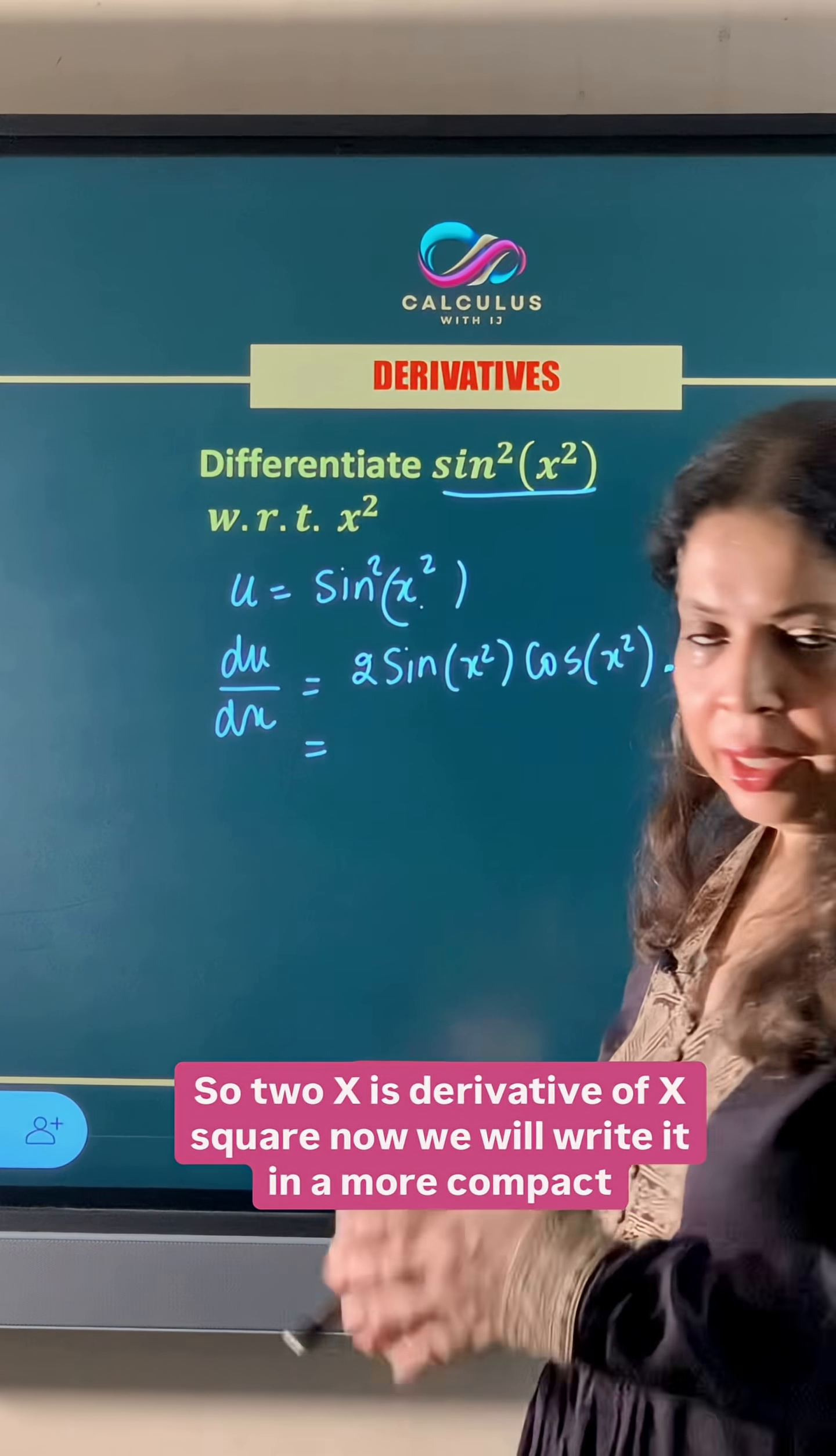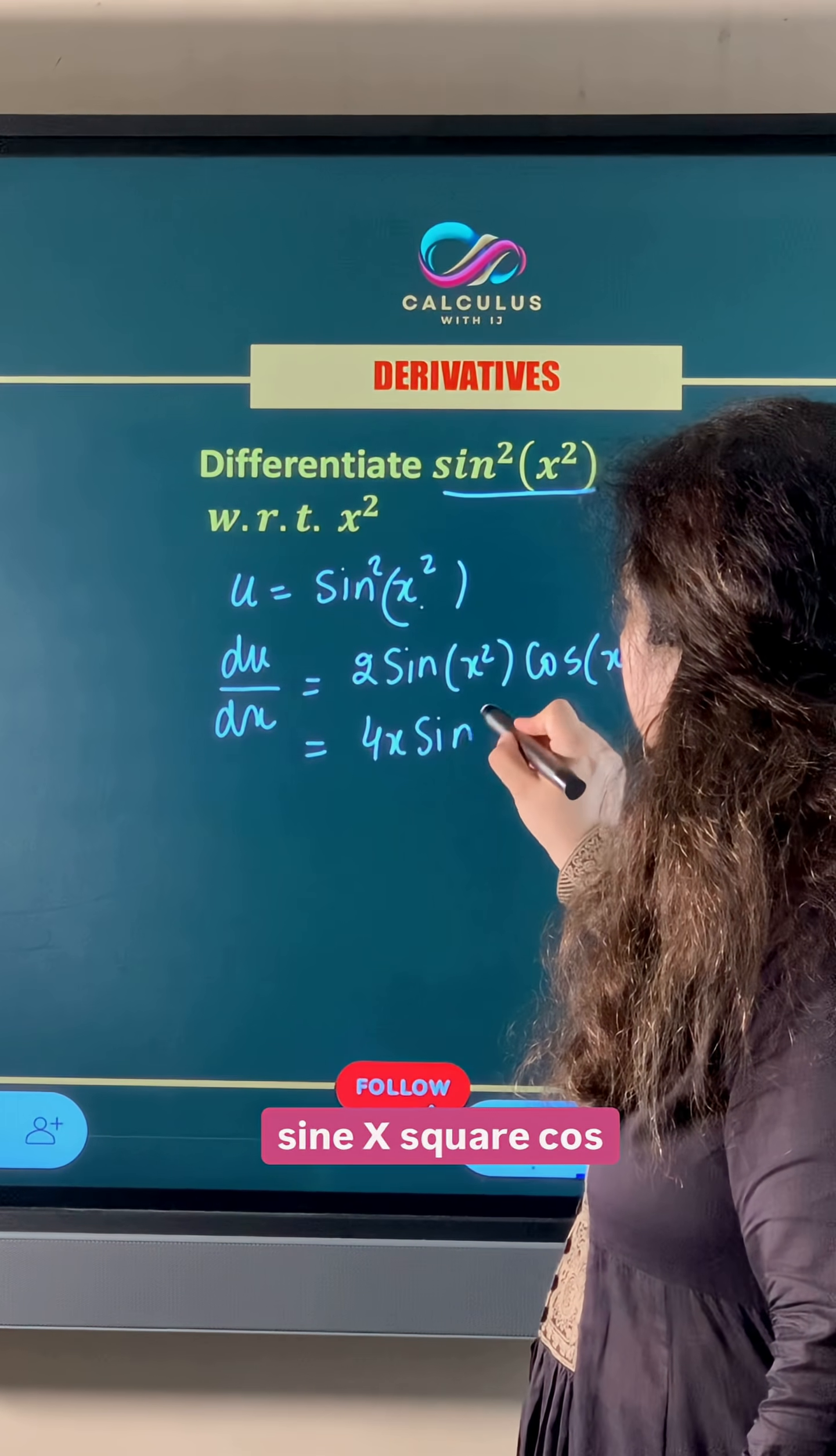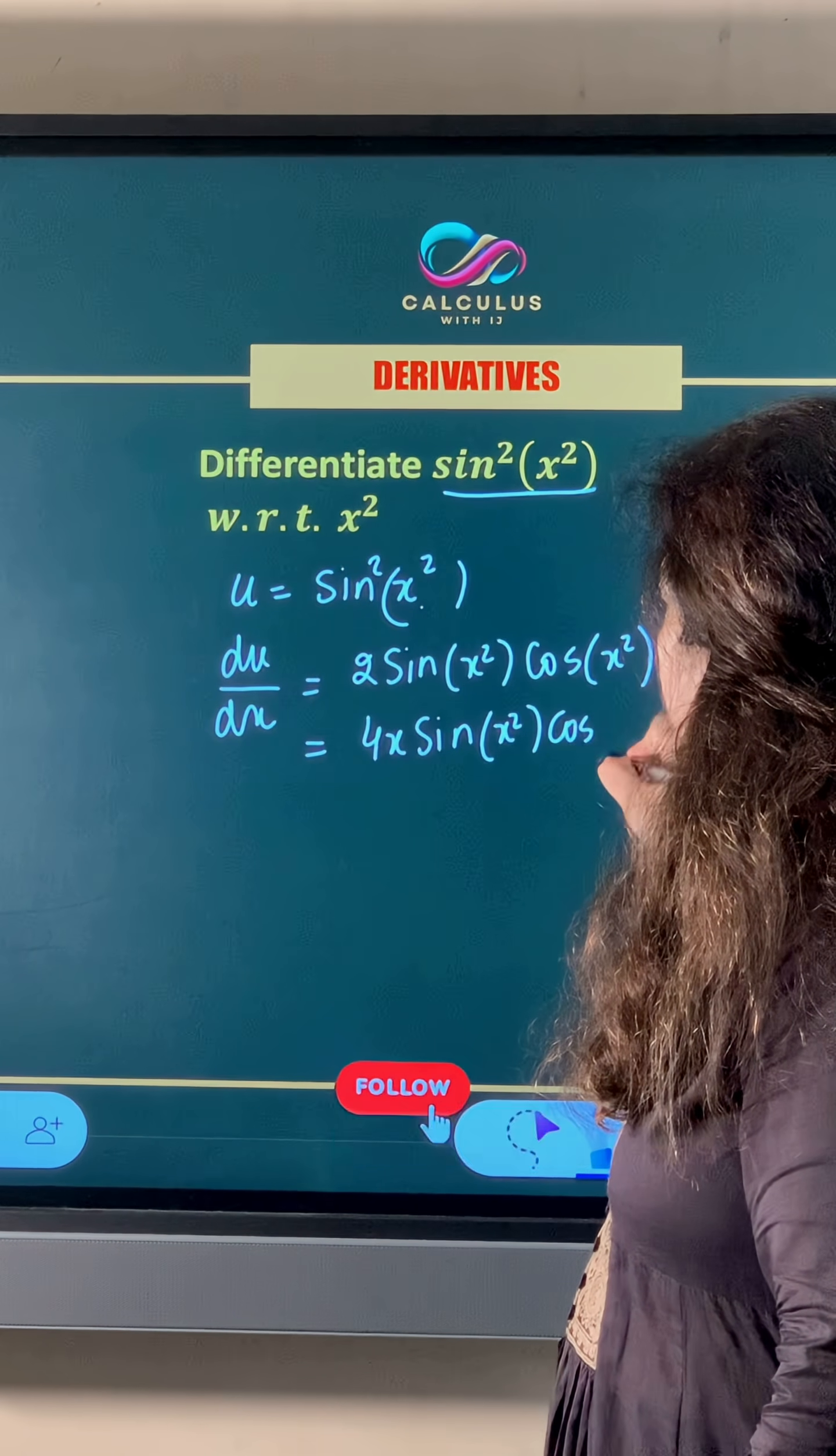Now we will write it in a more compact neat form. So this becomes 4x sin(x²) cos(x²).